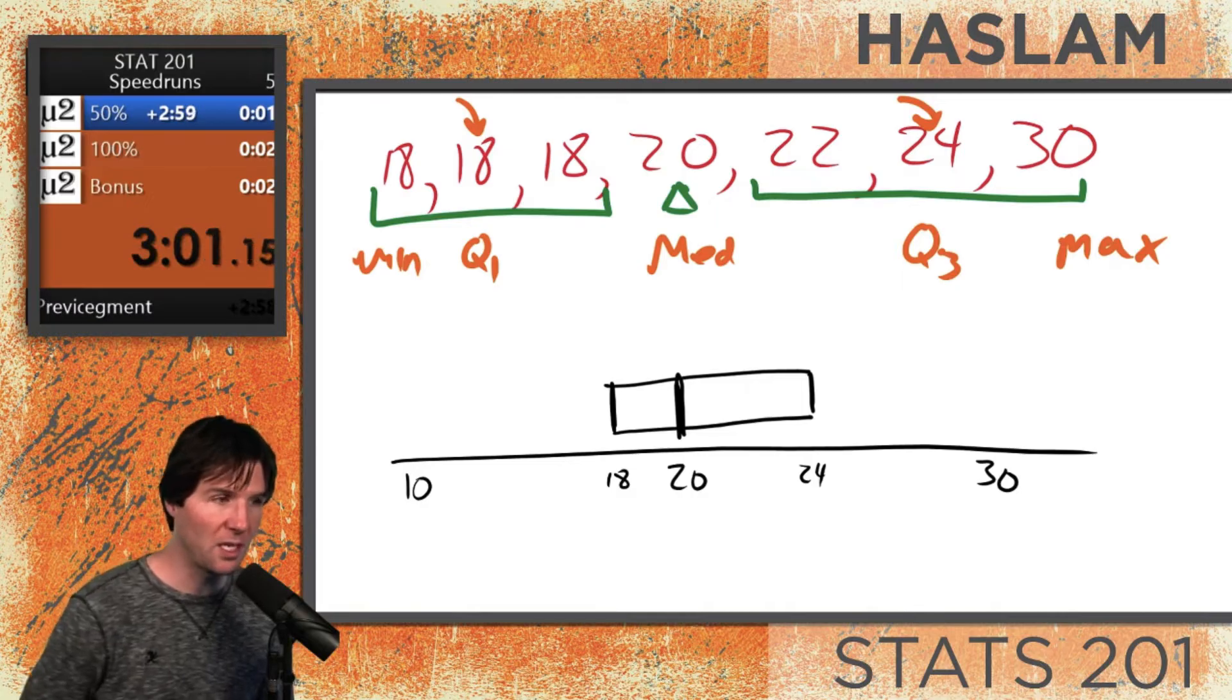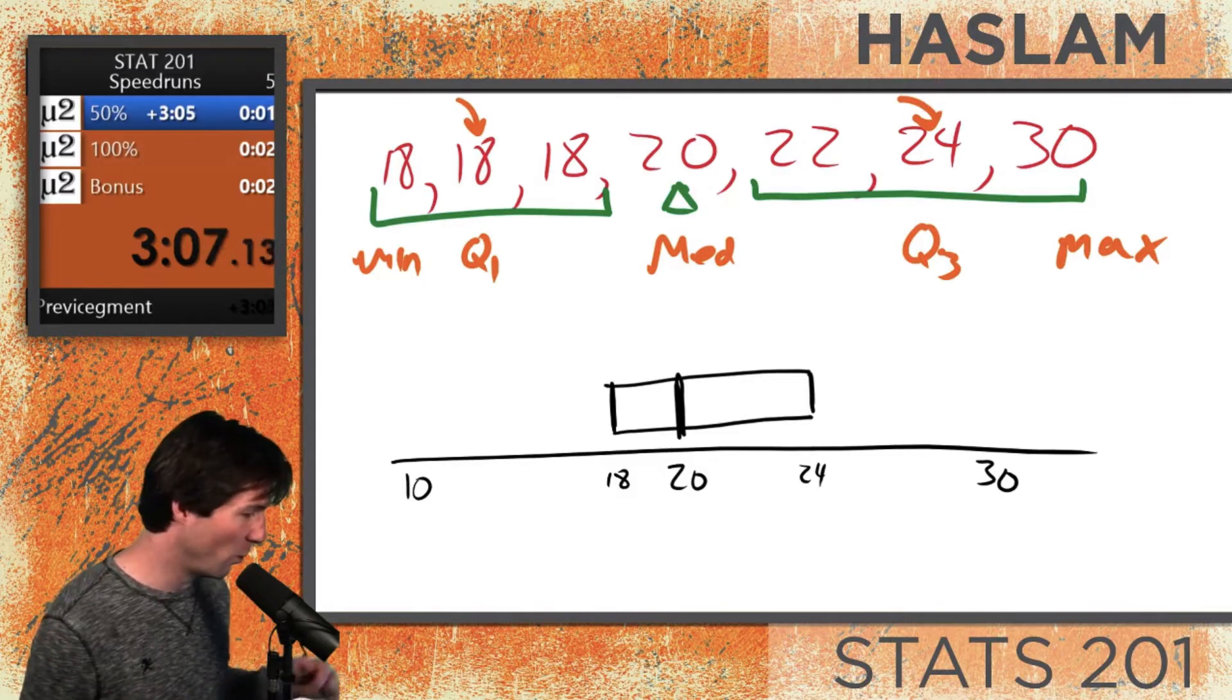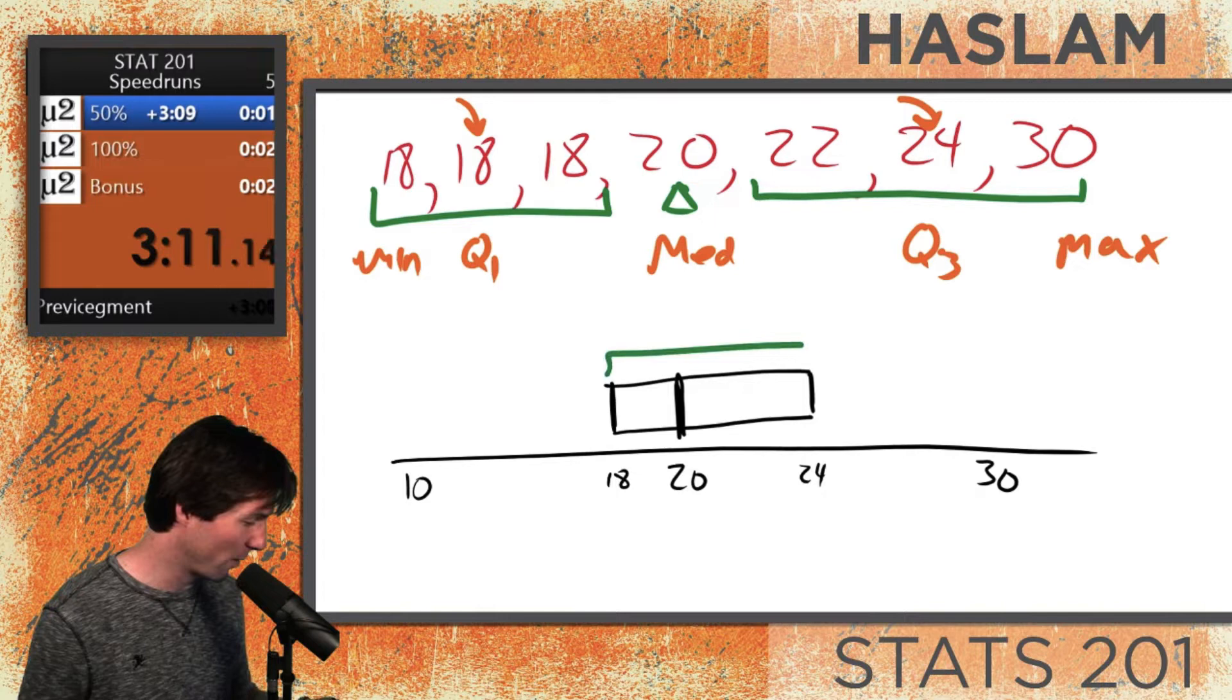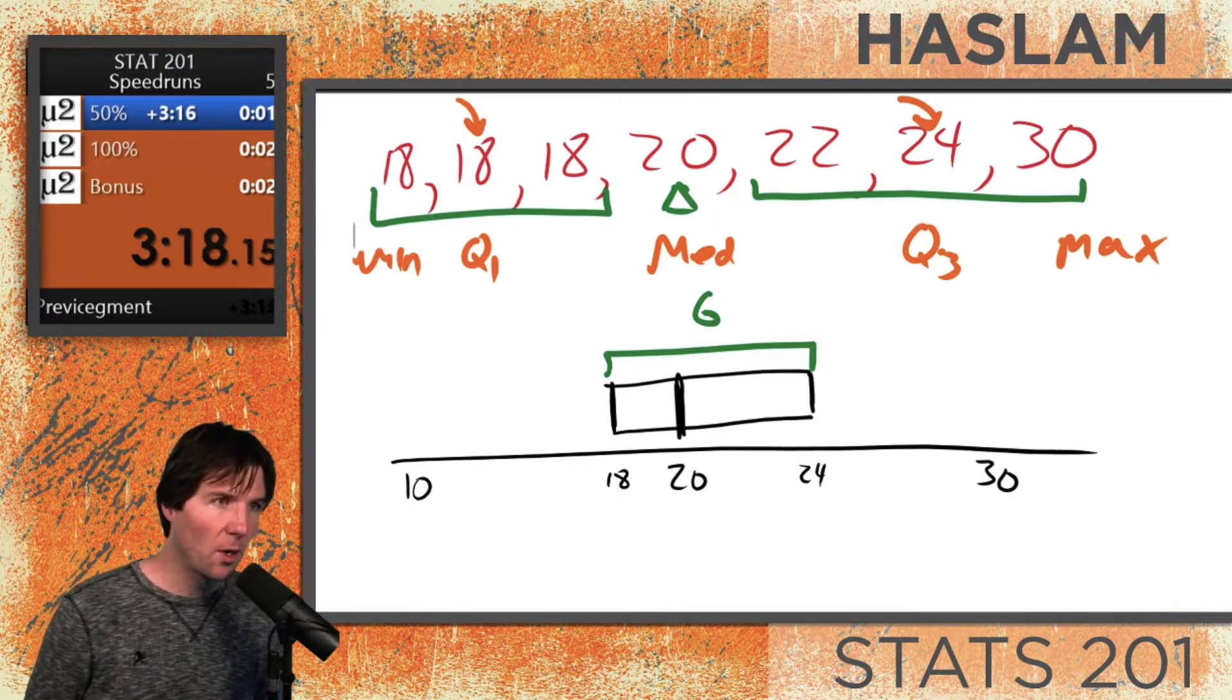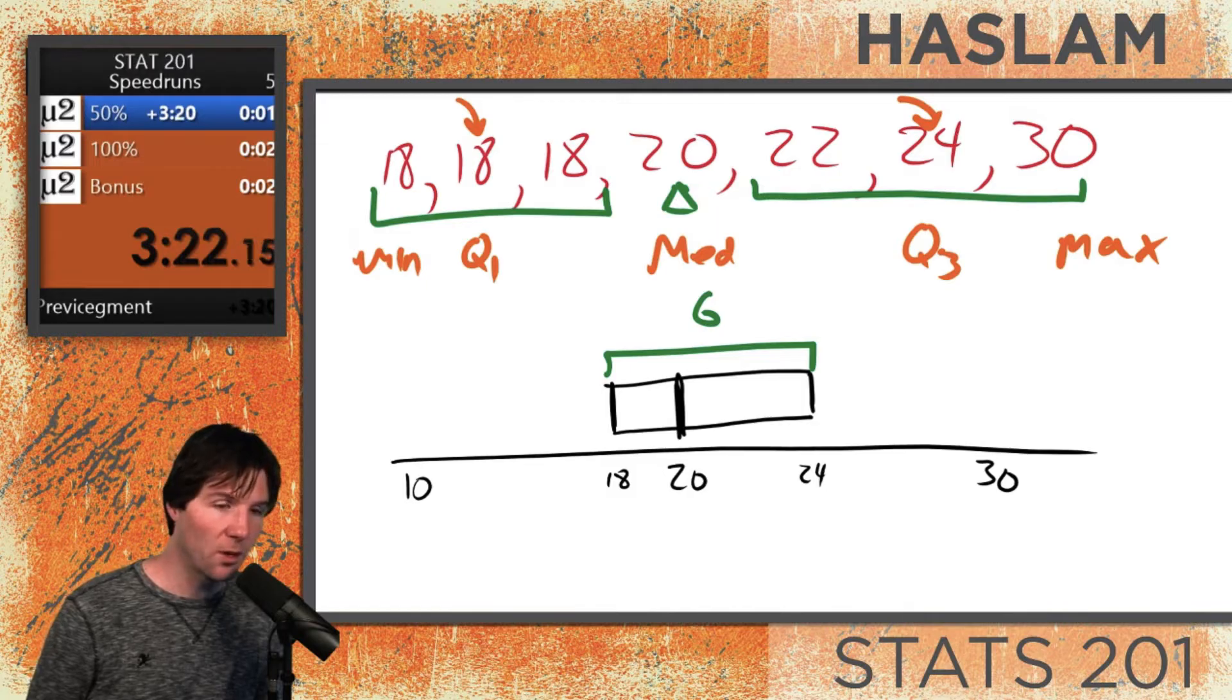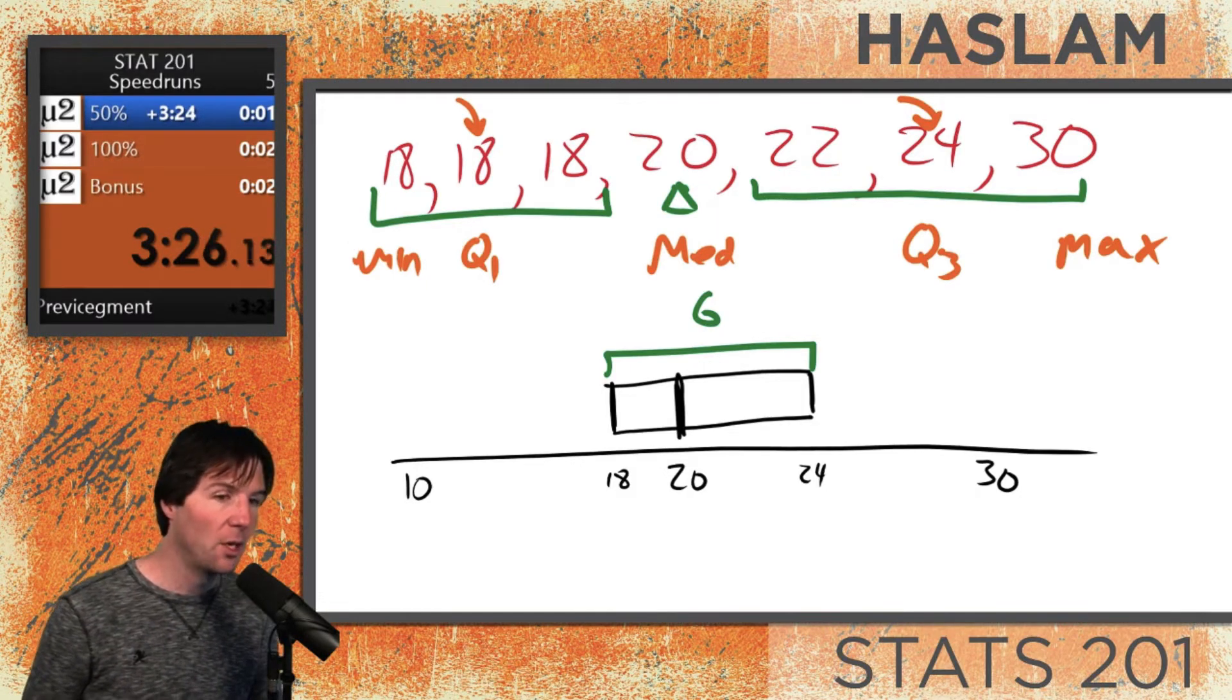Now here's the tricky part that a lot of people make mistakes on: now we need to draw our fences. We won't actually use these, but I want people to tell me, what is the length of the IQR? The IQR has a length of six. What is one and a half IQRs? One and a half IQRs would be six times 1.5, which would be 9.